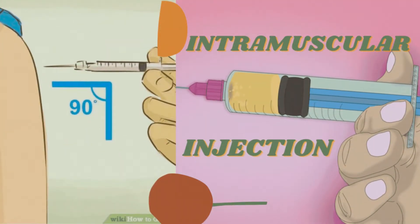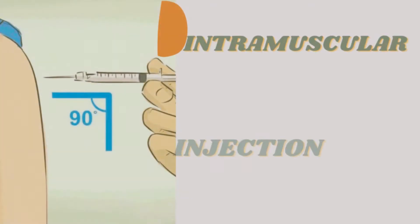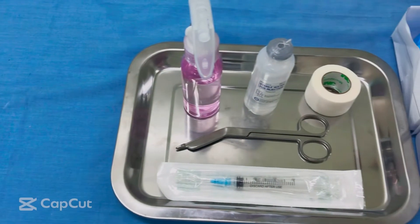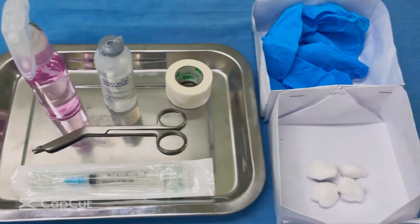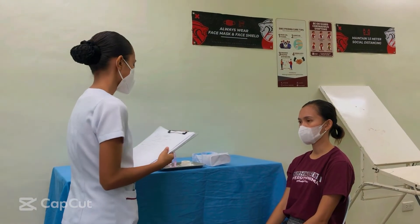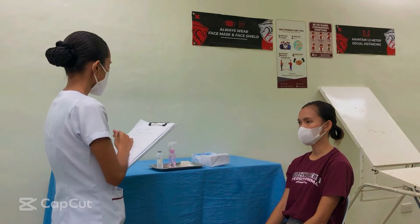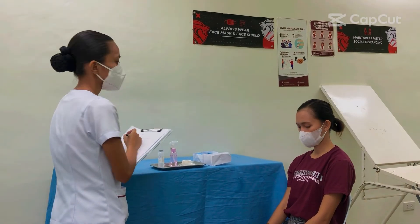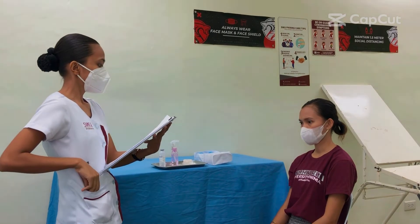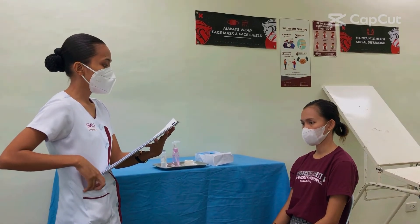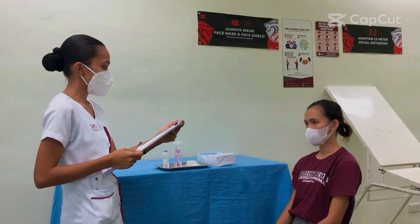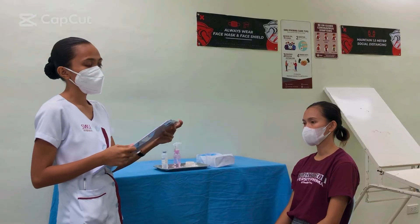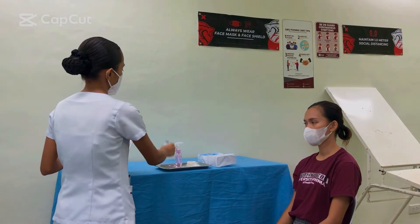Welcome, student nurses. For today's video, we are going to perform intramuscular injection. Number one: check accuracy and completeness of each medication administration record with the prescriber's medication order. Check the patient's name, medication name, dosage, route, and time for administration. Also check the date of expiration for the medication.